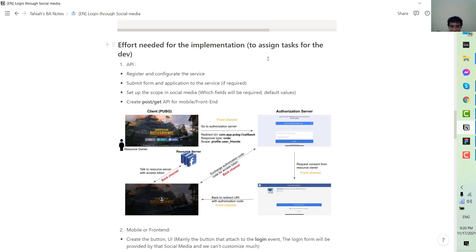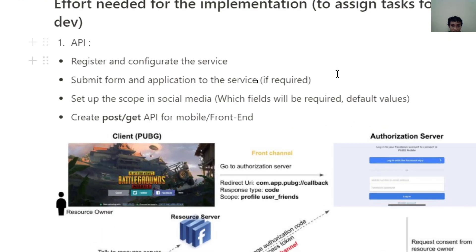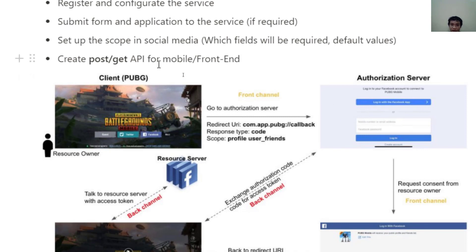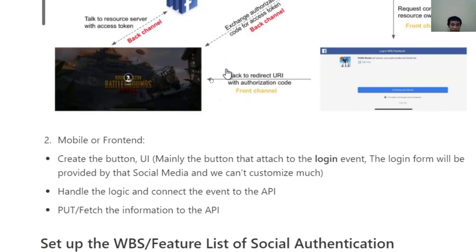Next, let's look at the efforts needed for implementation, so you can break down and assign tasks to developers. For the API developer, they need to register and configure the service. They may need to submit a form with application information to the service if required — for example, classifying the category of the application, the owner information, phone number, and disclaimer contact. The third task is setting the scope of the social media data fields that will be used, as well as the default options, and building the POST and GET API for the mobile and front-end app.